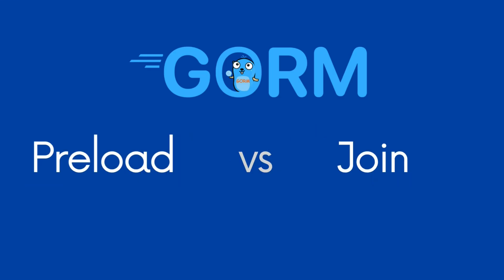Today we're diving into the world of GORM to explore two powerful features: preload and join functions. Understanding these functions can significantly optimize how you handle database relations in your applications. We'll break down the differences between preload and join, showcasing each function's use through a practical example application, and discuss when and why you might choose one method over the other.